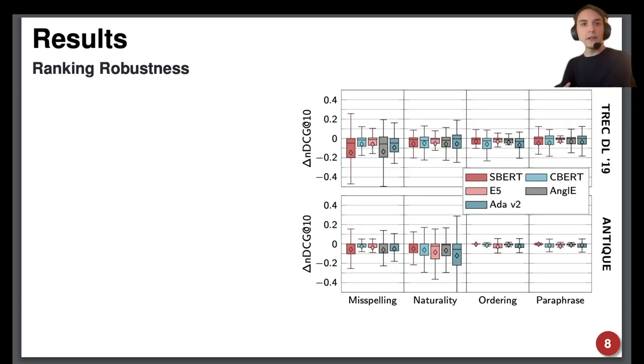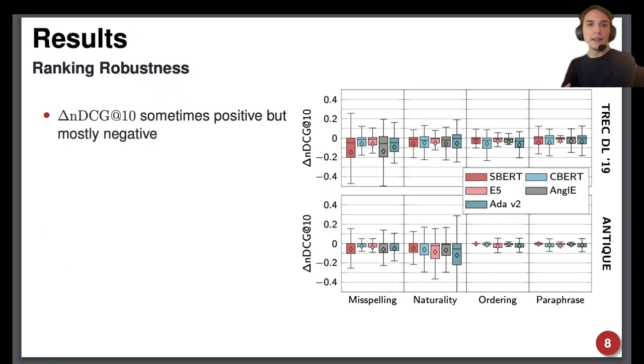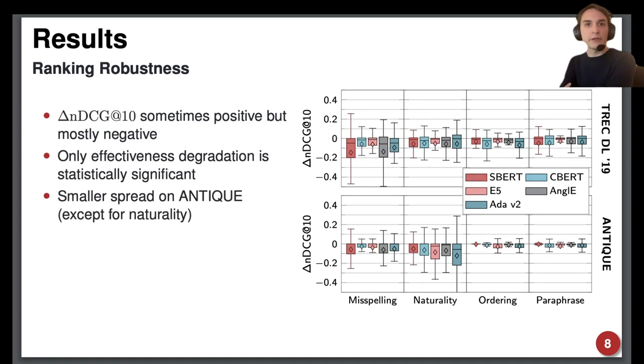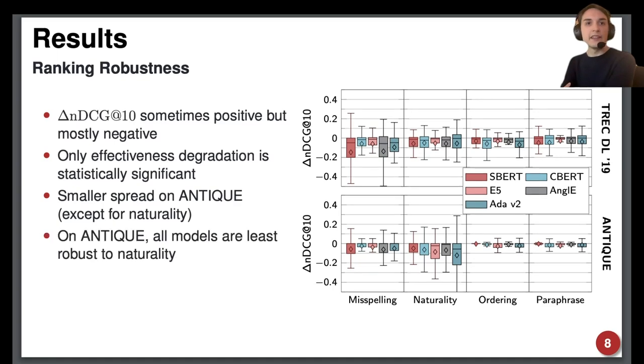For ranking robustness we find that in most cases the query variations reduce effectiveness and effectiveness degradation is statistically significant. We also generally observed a smaller spread of delta NDCG on ANTIQUE than on TREC DL in every category except naturality which on ANTIQUE all models are least robust to.